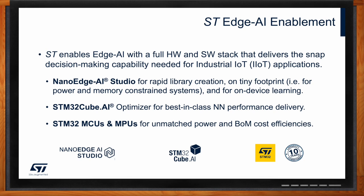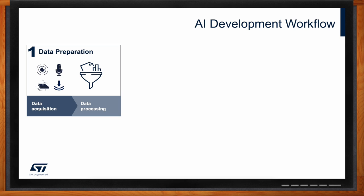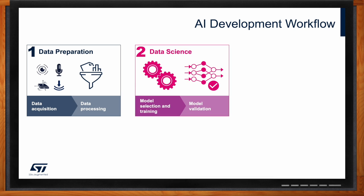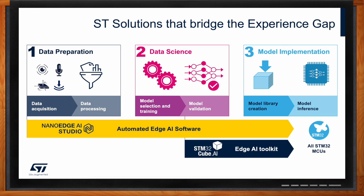Anyone who has done machine learning will see this workflow looks overly simplified, and it is. This is the simplified version: we go from data acquisition to data preparation and processing, then model selection and training, validation of that model, library creation including implementation on the target platform, and finally model inference. Looking at where ST's products slot in, NanoEdge AI Studio and Cube AI slide in as two different, parallel pipelines — not one then the other — created to address two different needs by two different types of users.